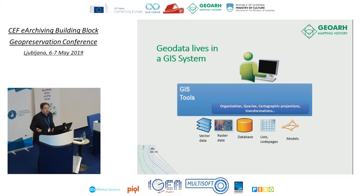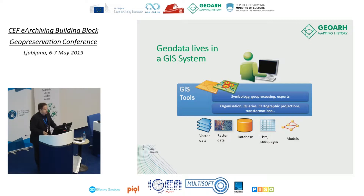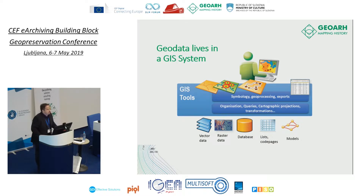Currently in Slovenia there's a project to change the coordinate system, so all these transformations are very important if we want to use old data correctly. We need to store transformation parameters and tools used, modeled so they can be replicated in the future — FME, as presented earlier, could be a good solution because we can automate it. We also need to store the symbology used, the geoprocessing steps, and what kinds of products, lists, and maps were created.